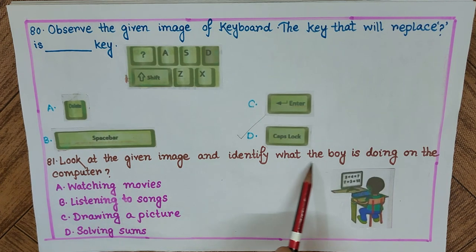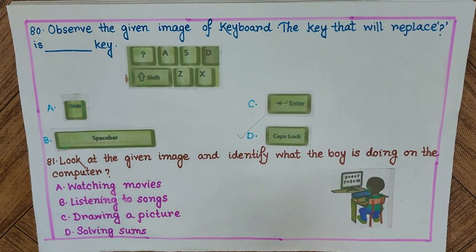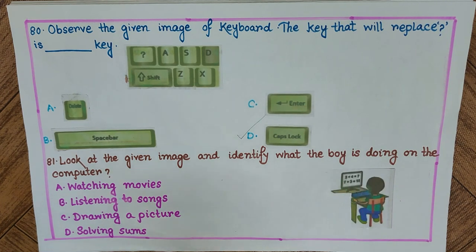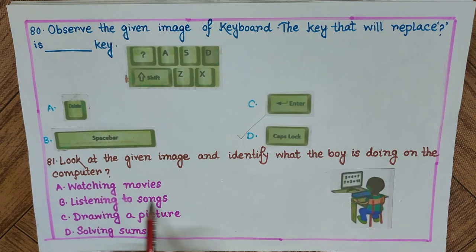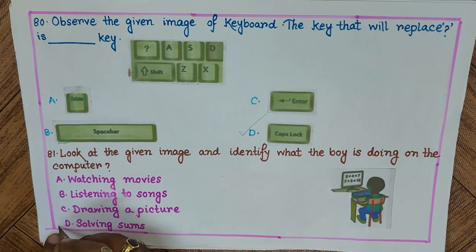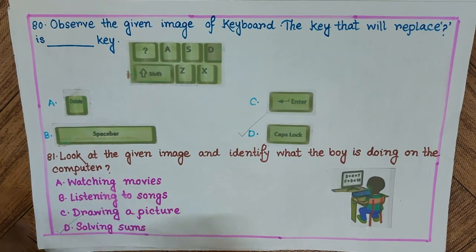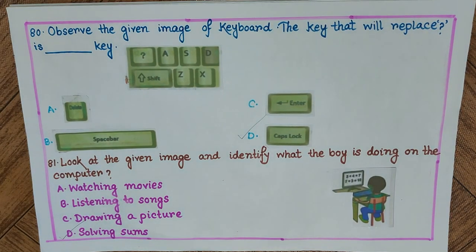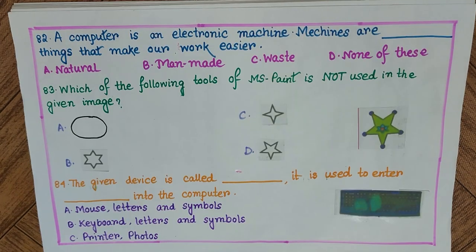Question 81: Look at the given image and identify what the boy is doing on the computer. He appears to be solving sums like 7+3 and 3+4. Options: A) watching movies, B) listening to songs, C) drawing a picture, D) solving sums. The answer is D) solving sums.